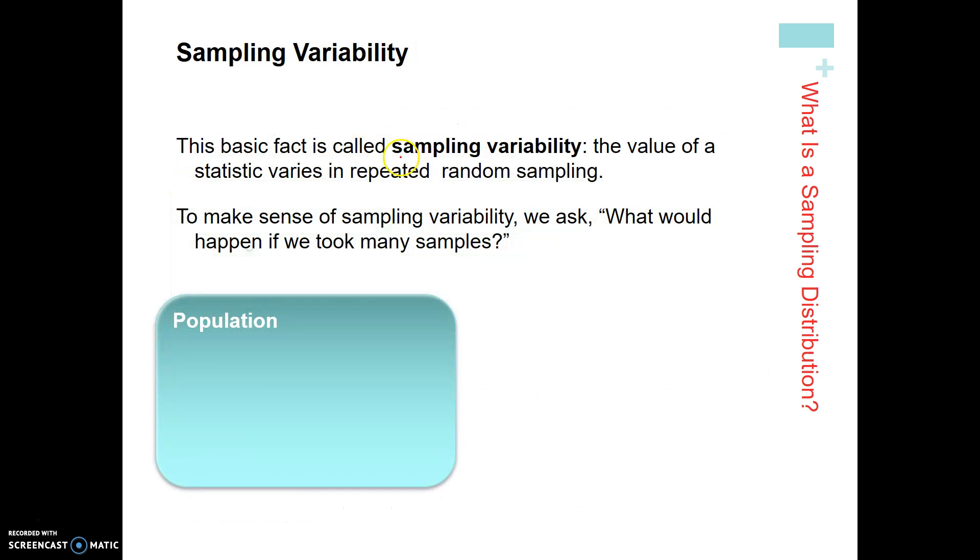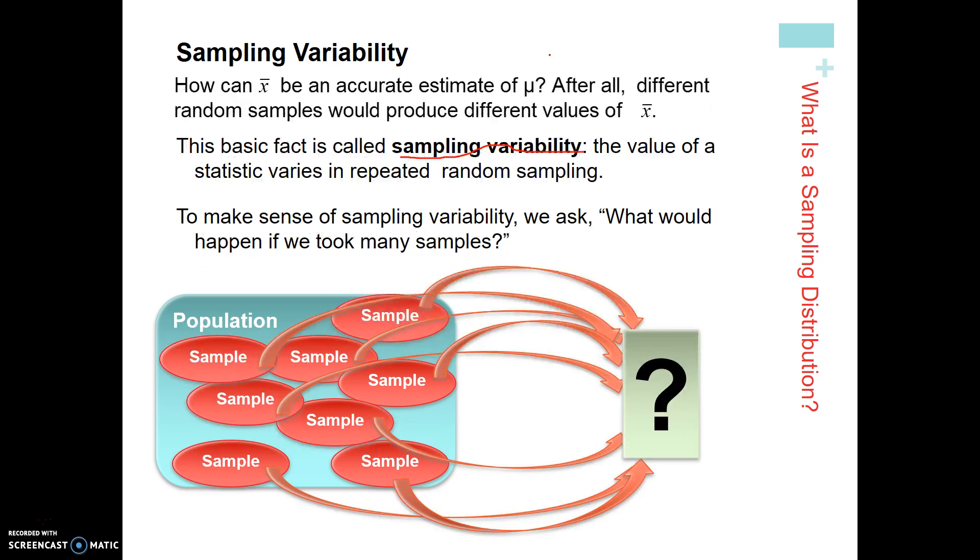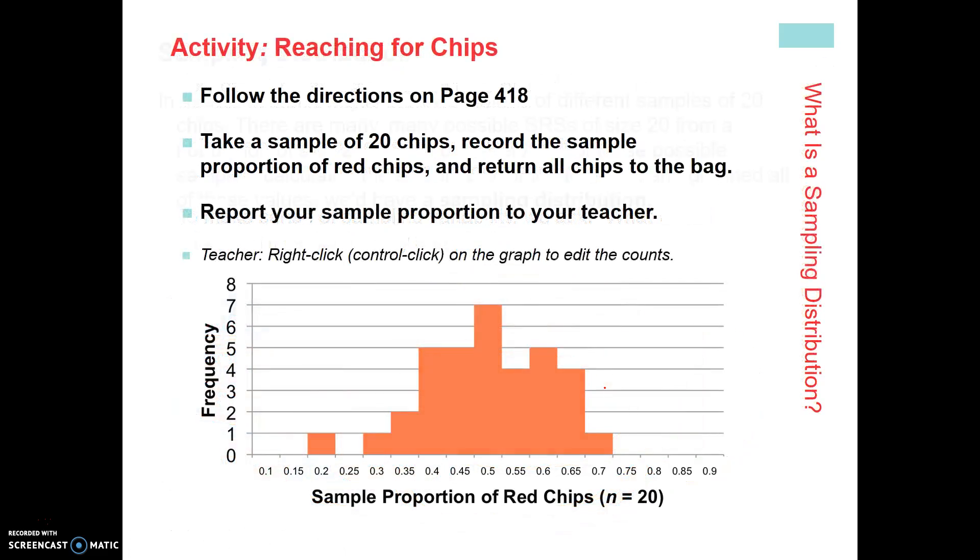Today we're going to talk about this idea of sampling variability. What this idea of sampling variability is, is if we repeatedly take this sample, we get a distribution that should look something like the population distribution. So the idea is you take a whole bunch of samples from the population and see what you would get. We've done that a little bit last time. We're going to define it a little bit better.